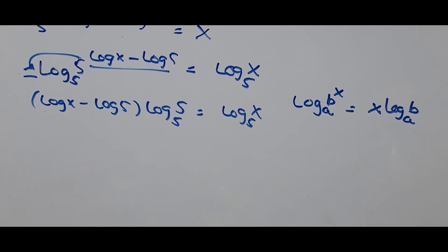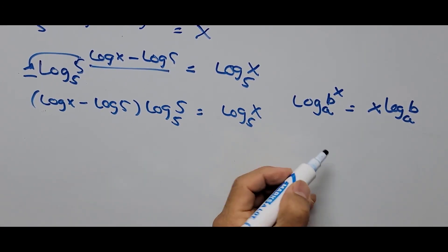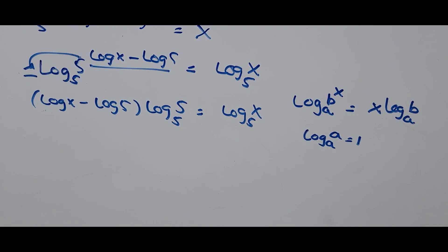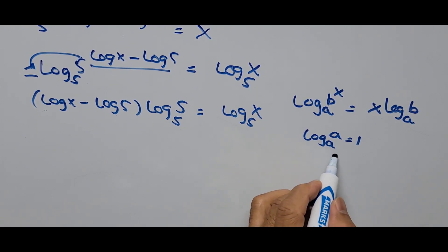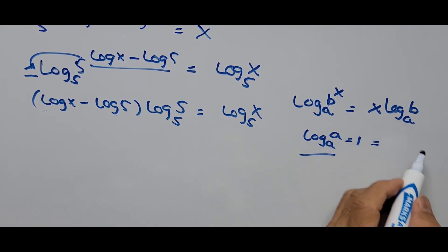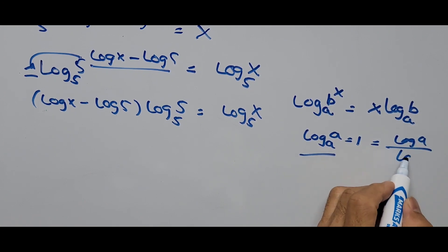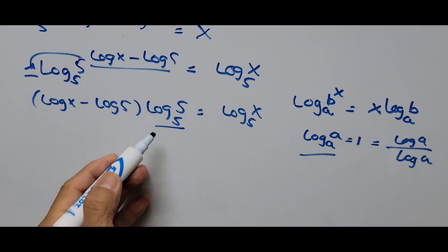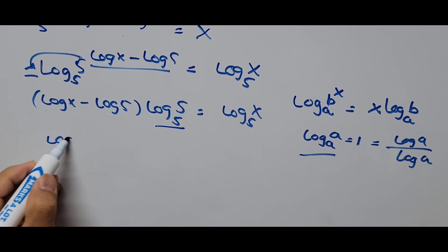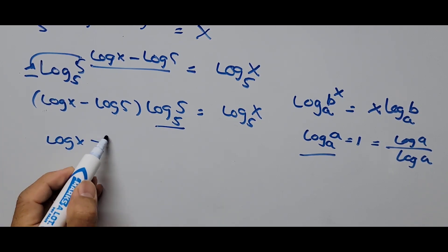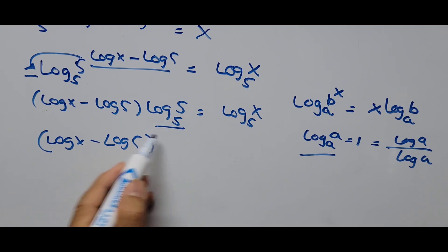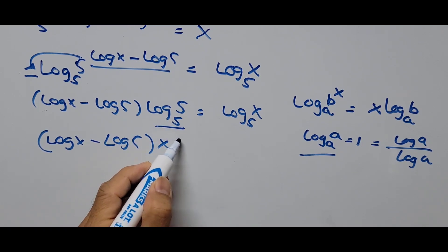Here there's another log formula to use: log of A to base A equals 1, since this is simply log of A divided by log of A, which equals 1. So on this side, log of X minus log of 5, times log of 5 base 5 — that's times 1 — equals log of X to base 5.